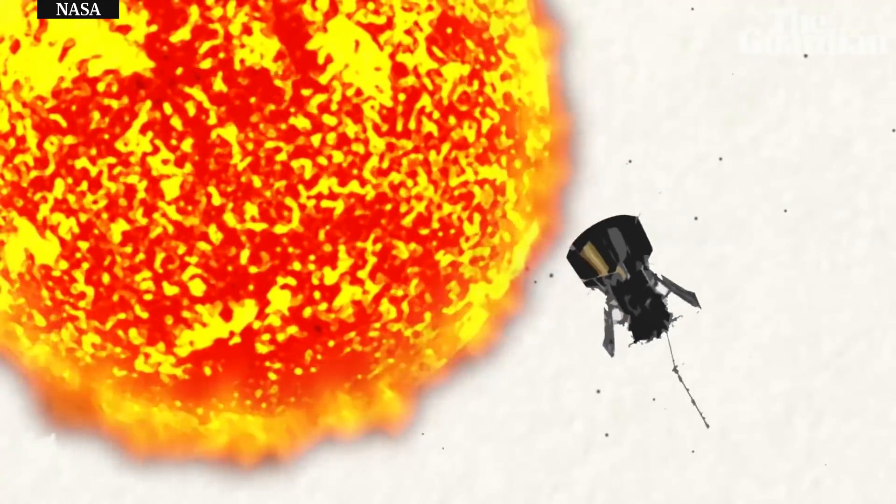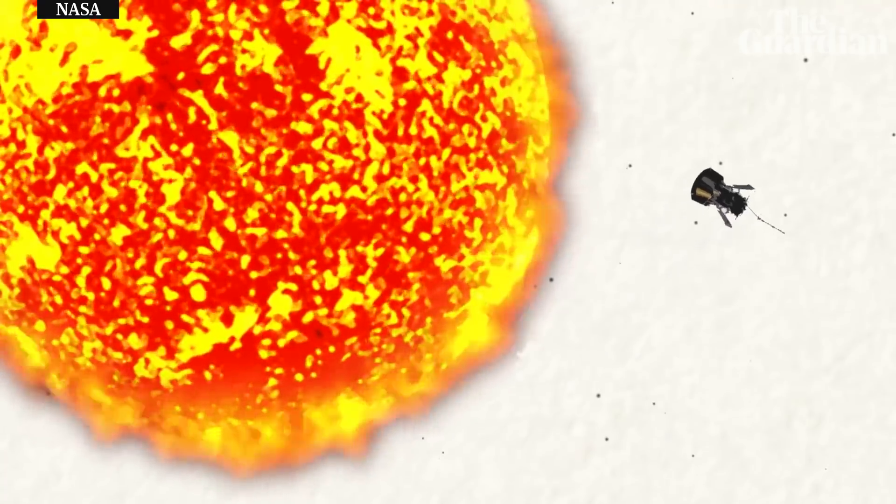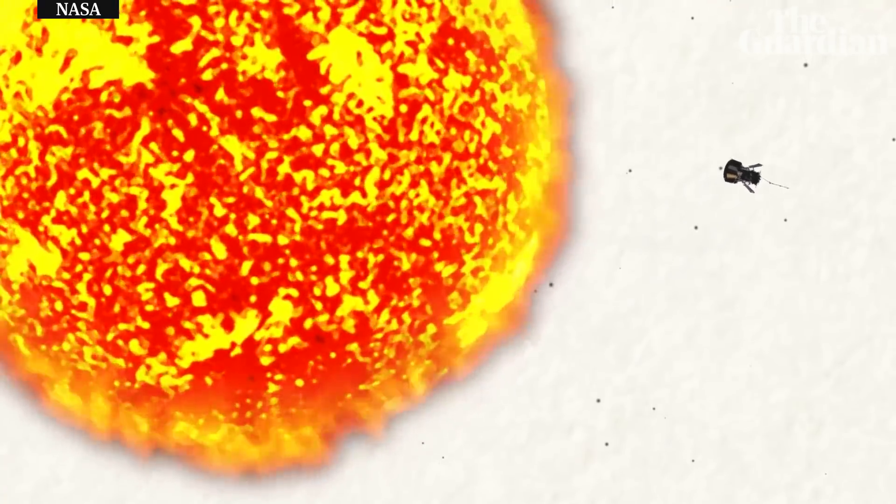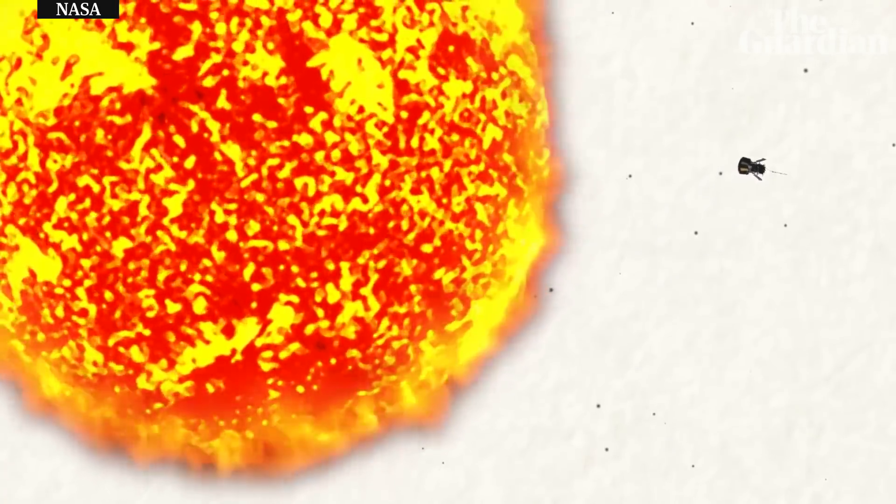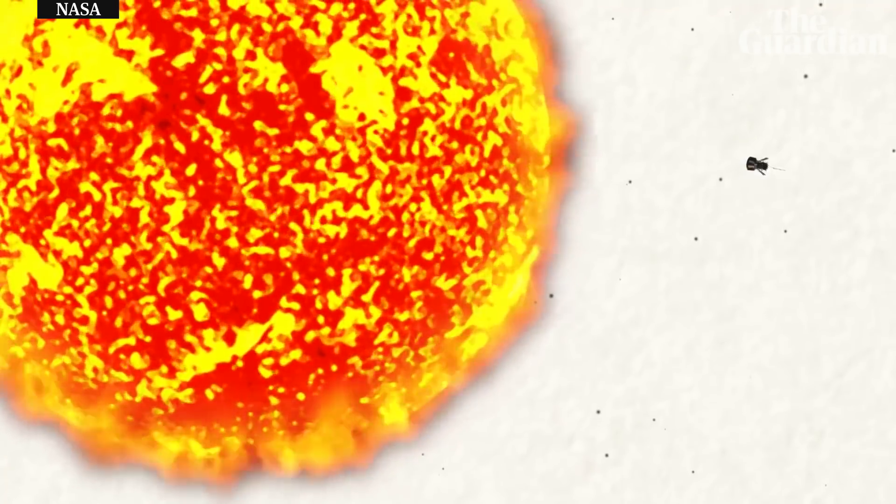NASA's Parker Solar Probe will soon fly closer to the Sun than any spacecraft before it, about 4 million miles from the visible surface. But getting that close to the Sun requires some fancy orbital mechanics.